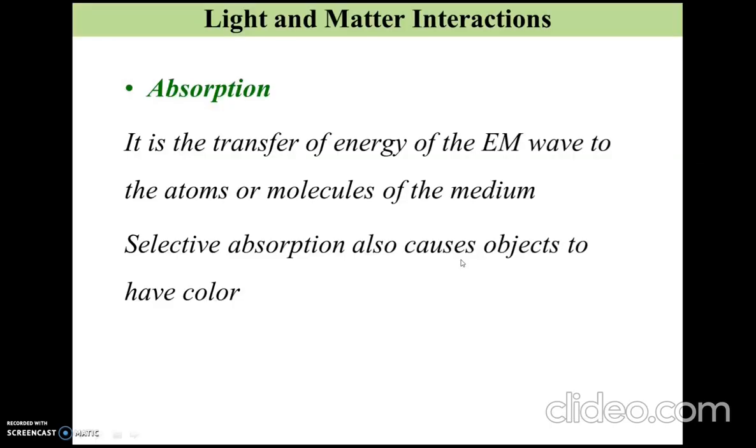Another common type of interaction that happens between light and matter is absorption. It is one of the most essential interactions for life to survive actually. It is simply the transfer of energy of the electromagnetic wave to the atoms or molecules. Because of the selective absorption, we see that a lot of objects actually have color.